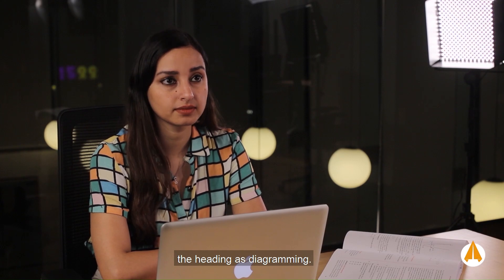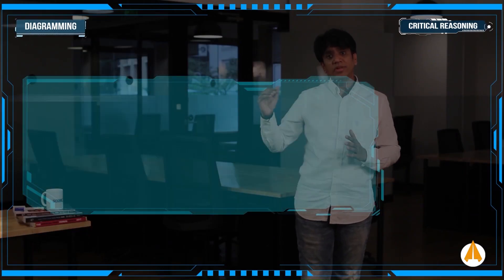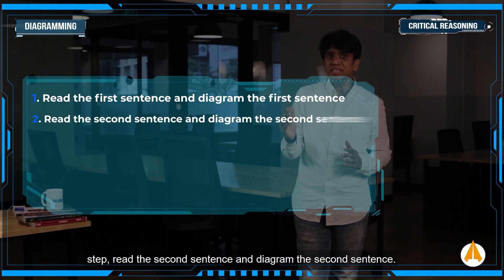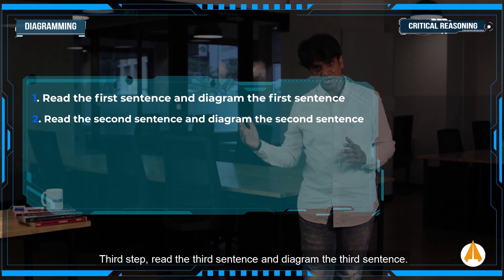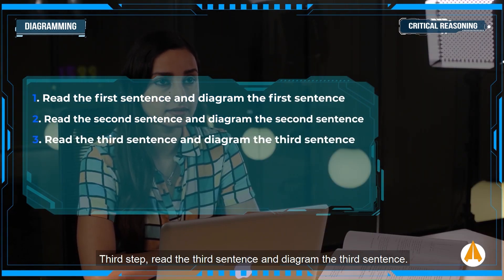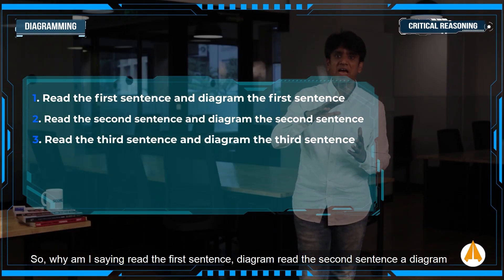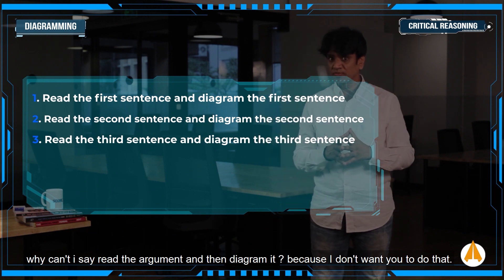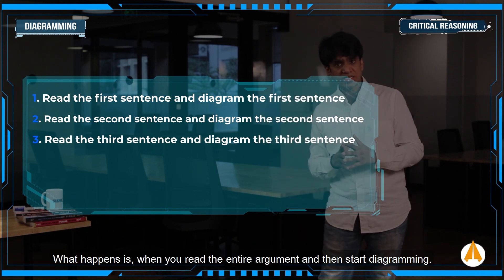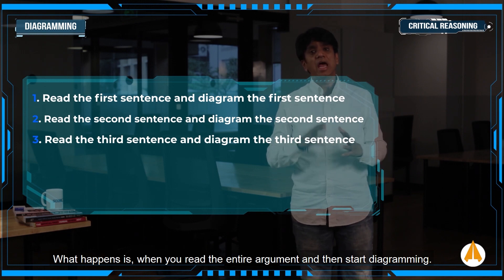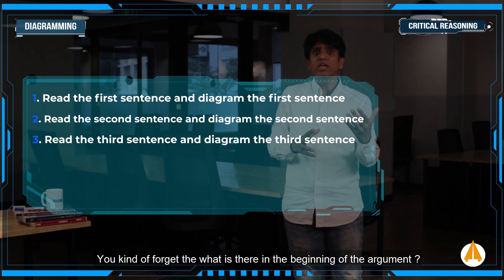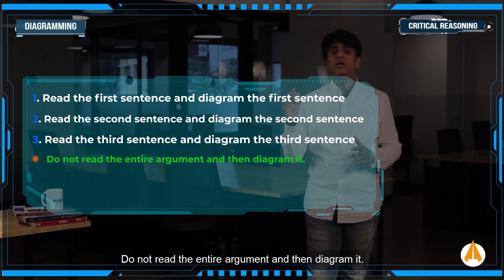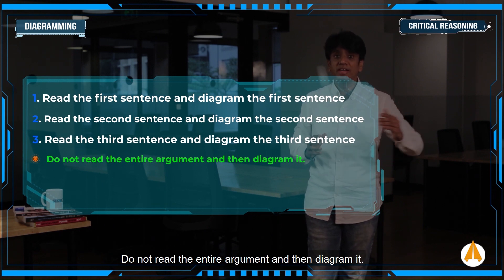Put the heading as 'Diagramming.' First step: read the first sentence and diagram the first sentence. Second step: read the second sentence and diagram the second sentence. Third step: read the third sentence and diagram the third sentence. Why can't we read the entire argument and then diagram it? Because when you read the entire argument first and then start diagramming, you forget what is in the beginning of the argument. Therefore, do not read the entire argument and then diagram it.